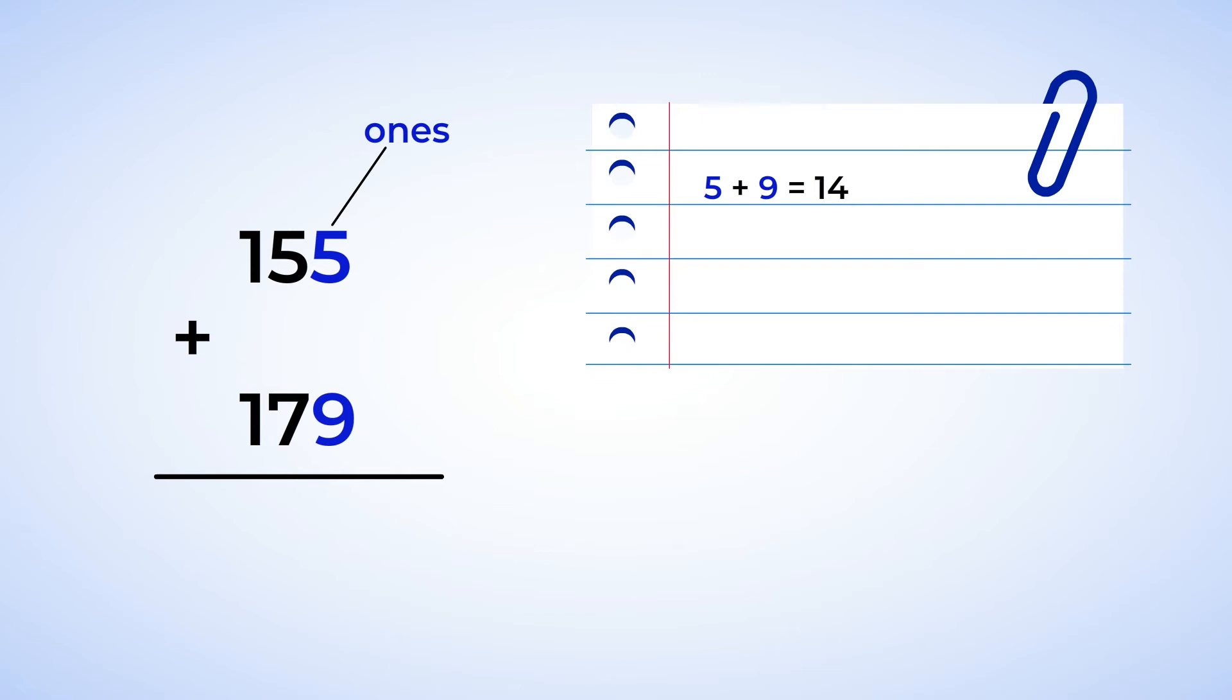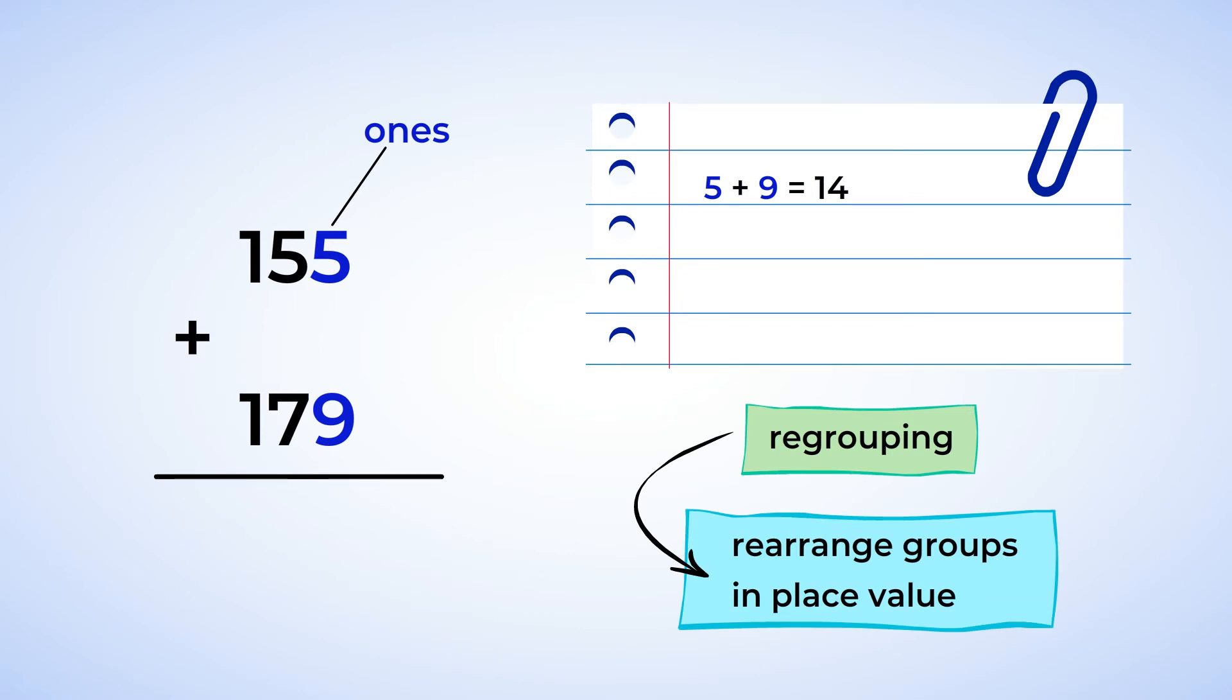The magic that you need here is called regrouping. Regrouping means that we can rearrange groups and place value. It's a really important technique you use quite often with addition problems. As 5 plus 9 equals 14, this means that you can't put all 14 ones in the ones place when adding. Regrouping allows you to change the 14 ones into one ten and four ones. You will write the four as the ones place of the solution and move the one into the tens place above the addends.